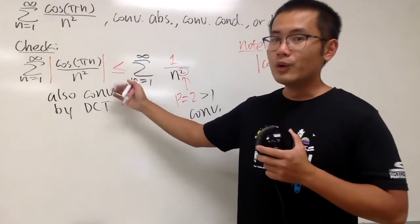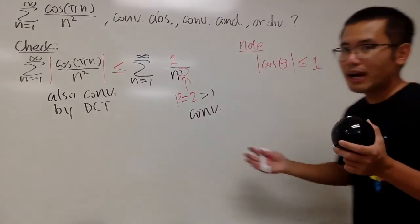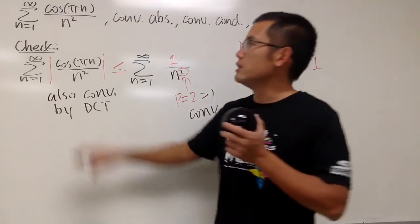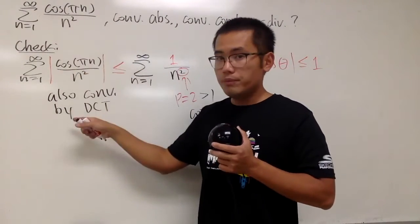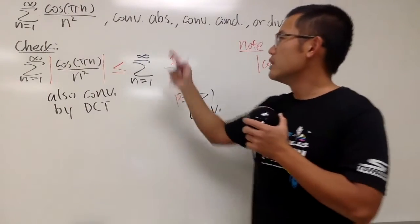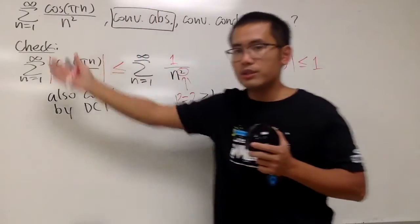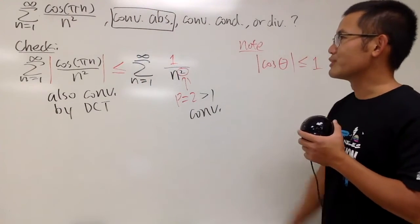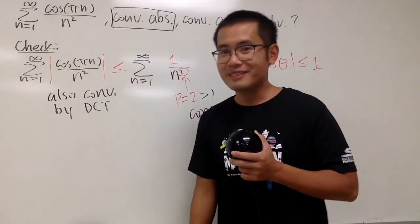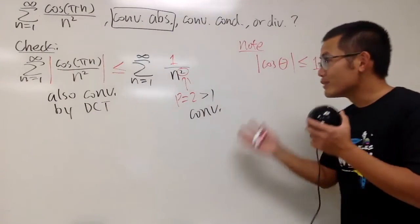We took the absolute value of the original series and it converges. Therefore, this series is absolutely convergent. You don't have to check anything else — when you have absolute convergence, the original series automatically converges as well.